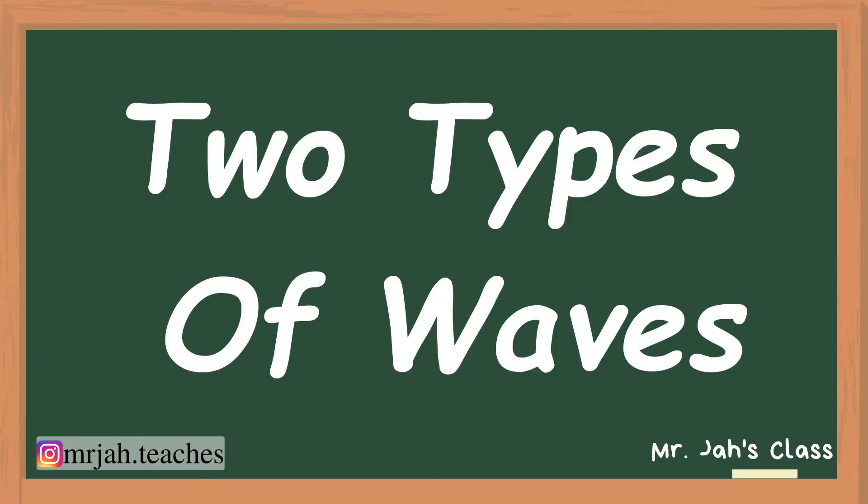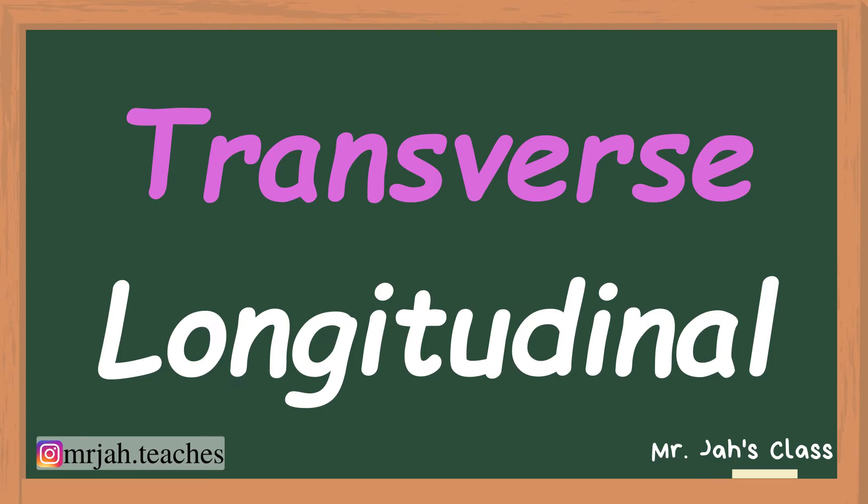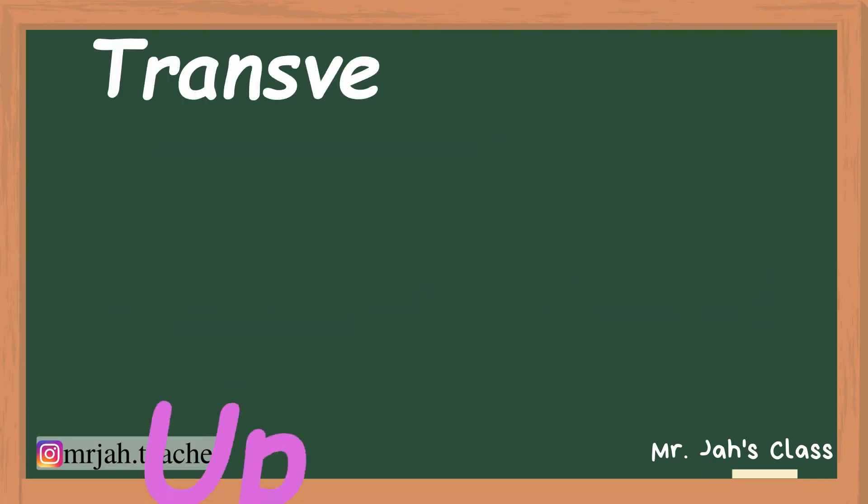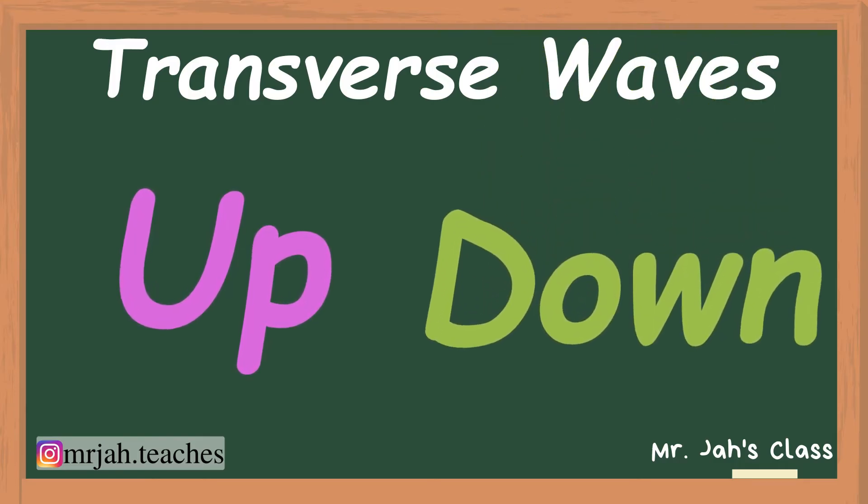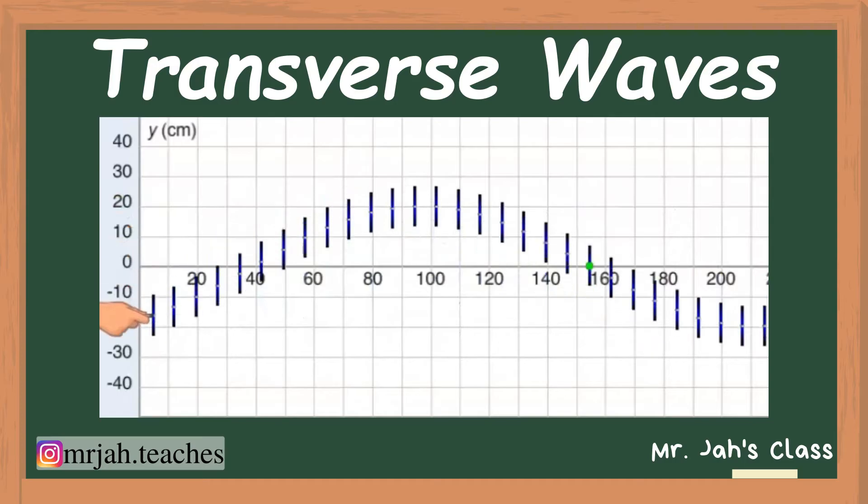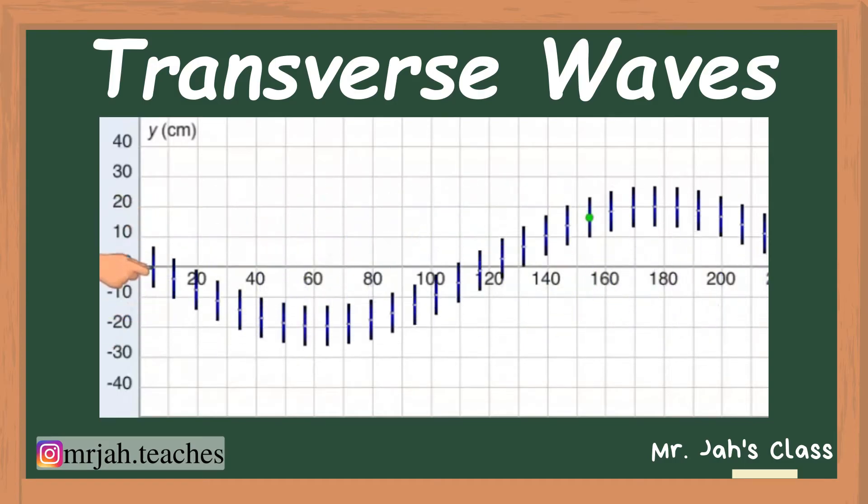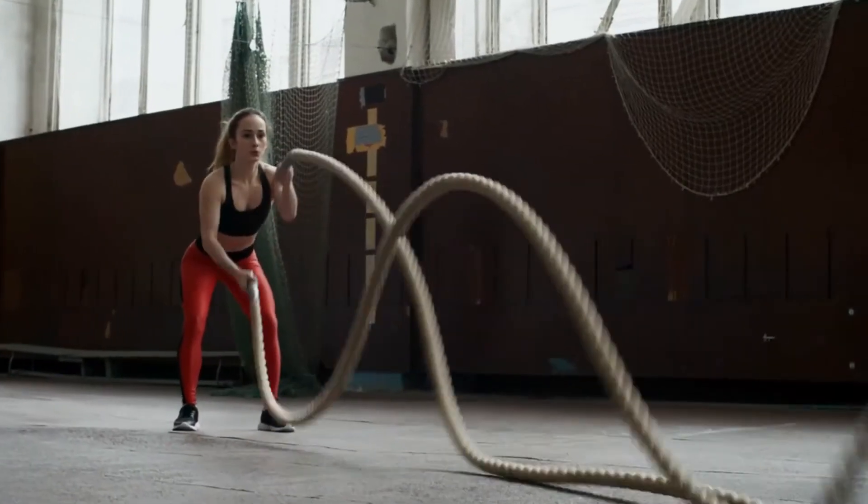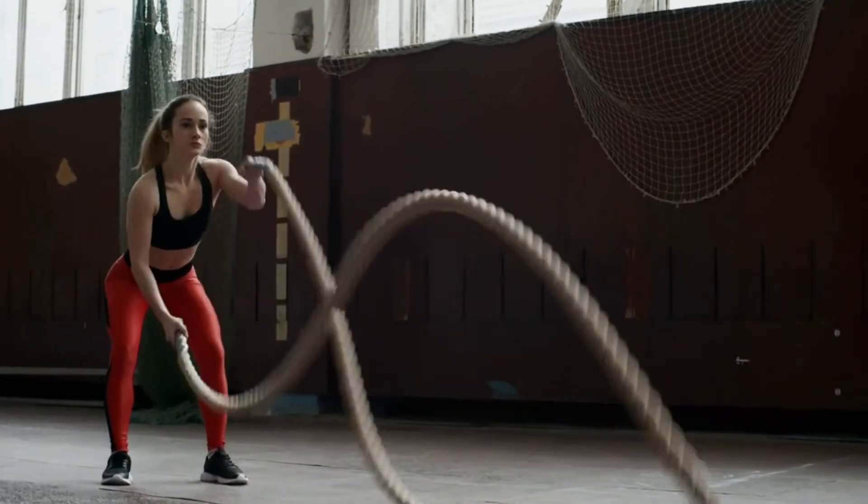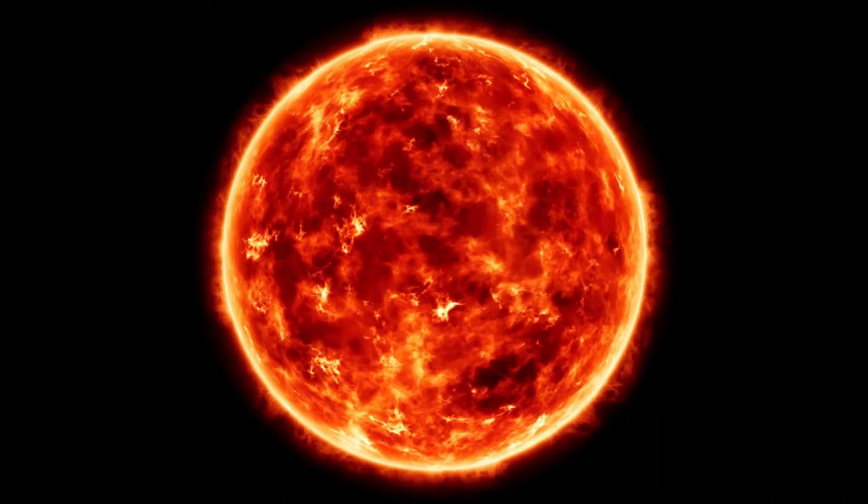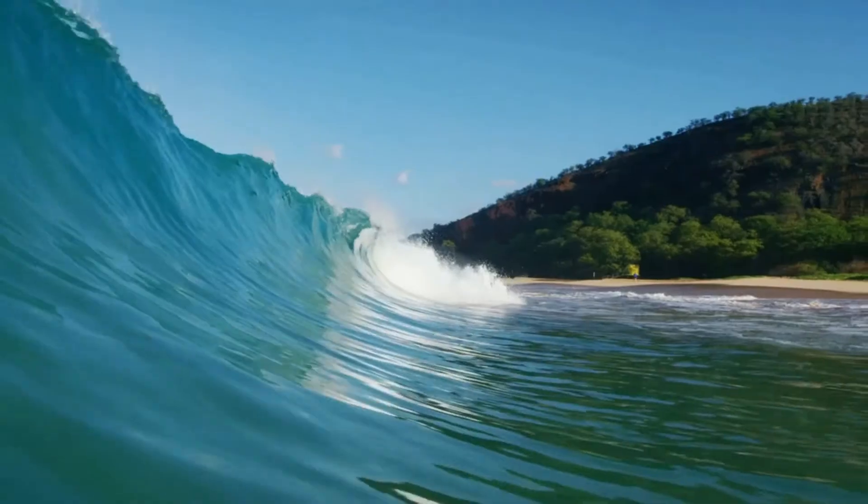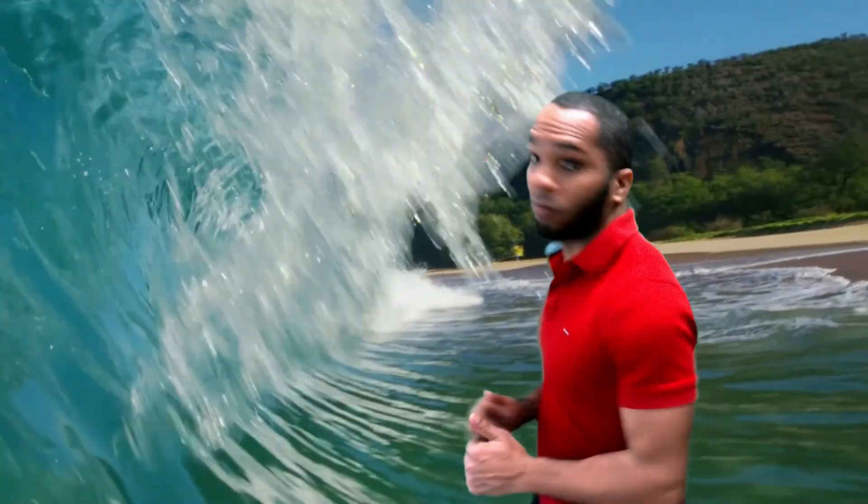There are two types of waves, transverse and longitudinal waves. Transverse waves go up and down. This is how a transverse wave looks. Examples of transverse waves include an athlete doing battle ropes, the light that is emitted from the sun, and ocean waves.